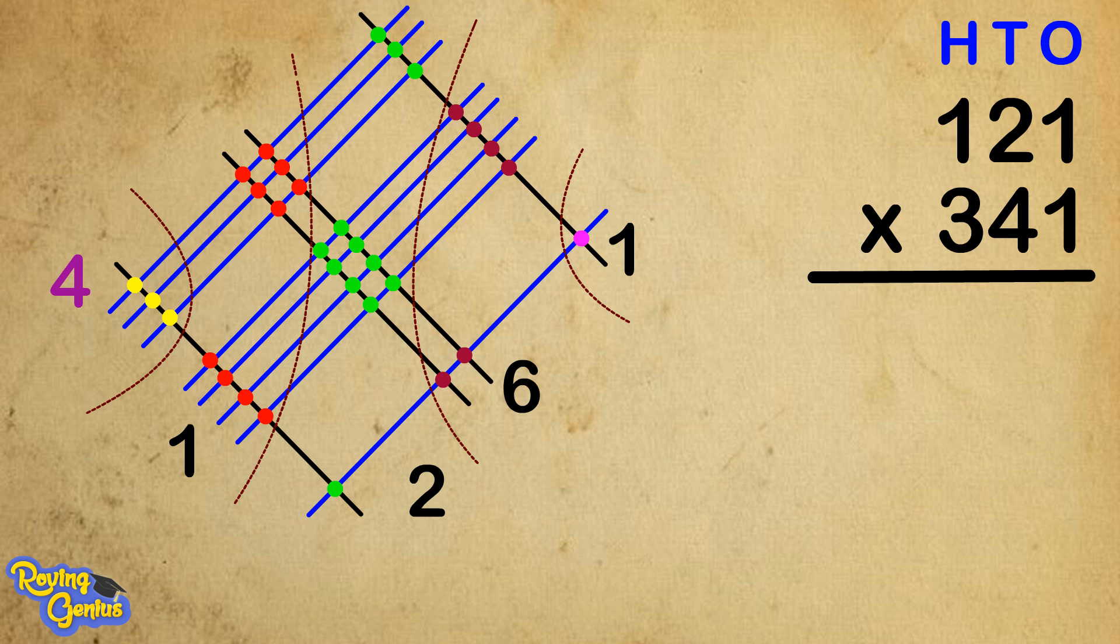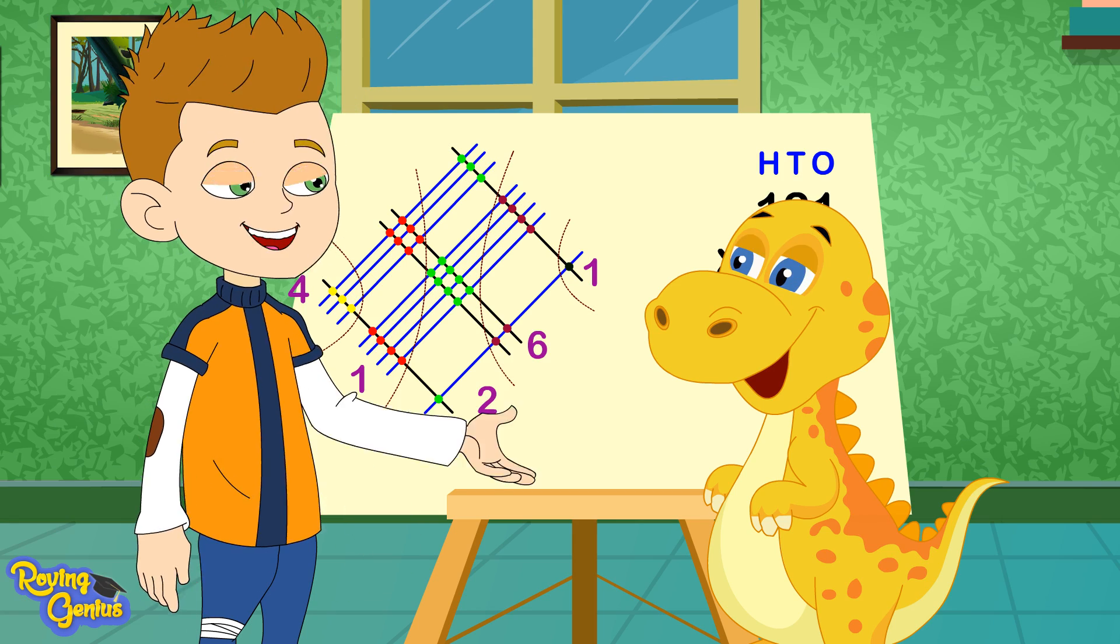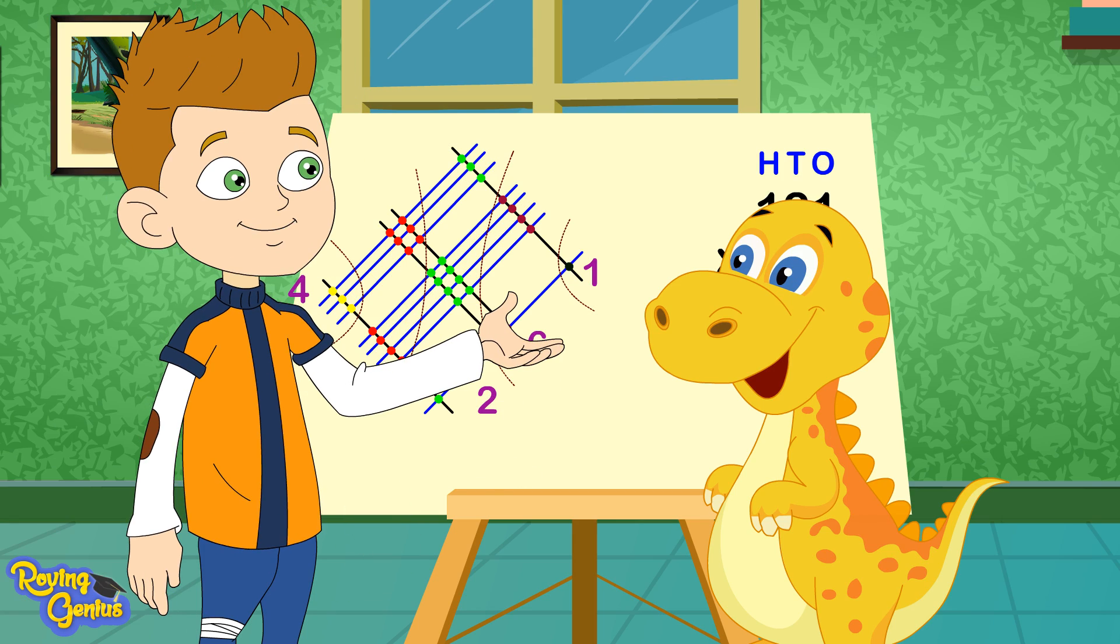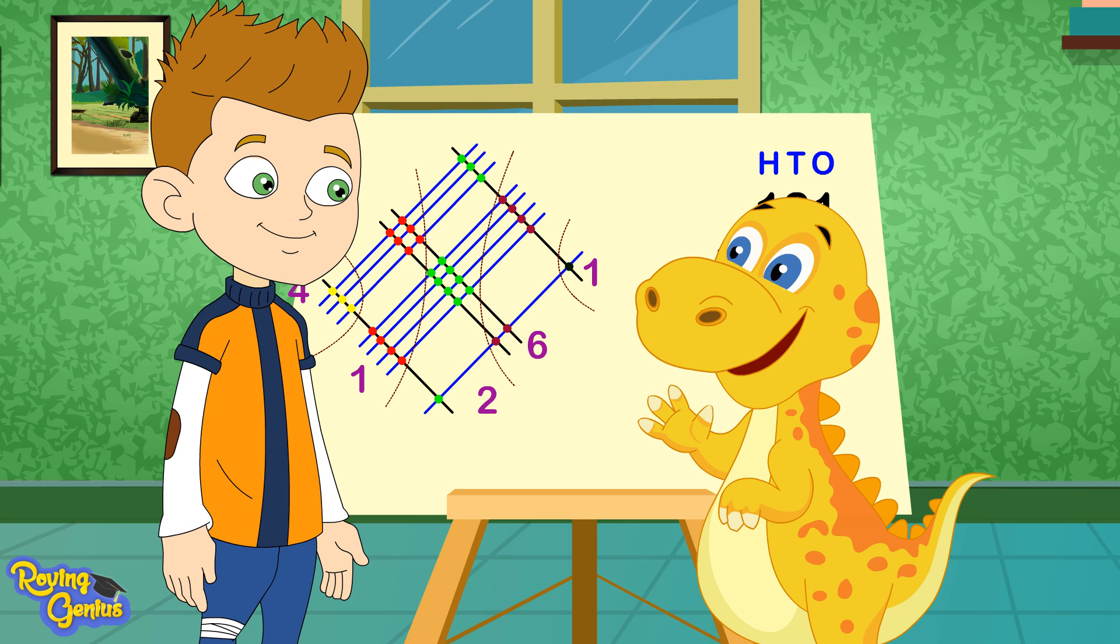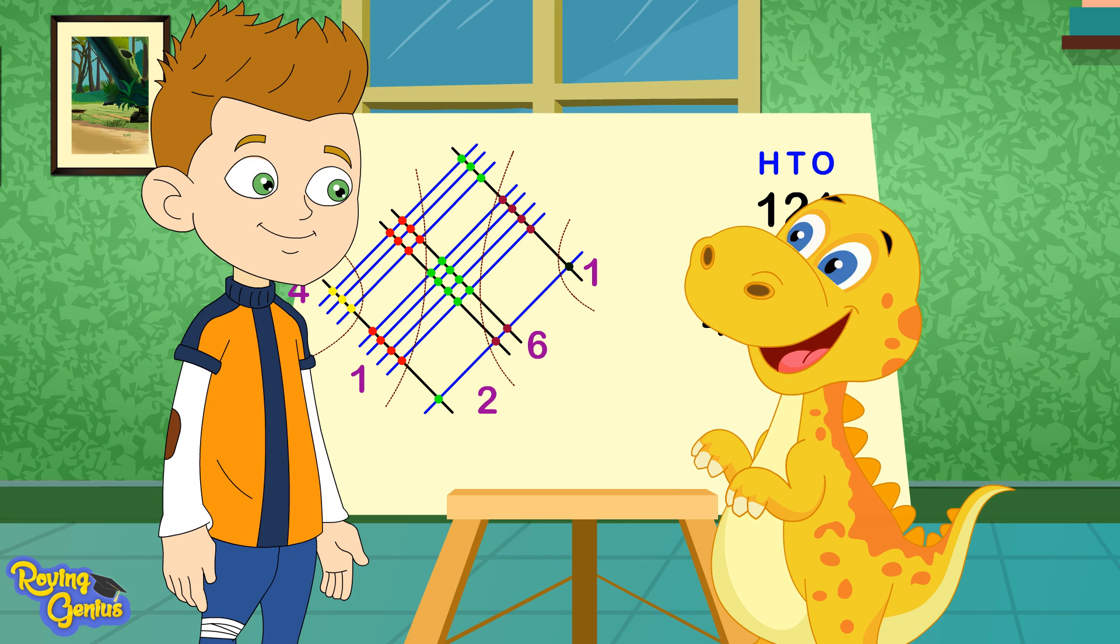Thus we get 4 in the tens thousands place. Thus the answer is 41,261. You made it so easy, Elvis. Now you know what to do when you get stuck with these problems: just draw it.